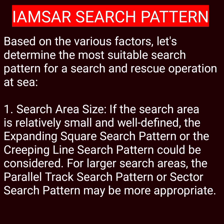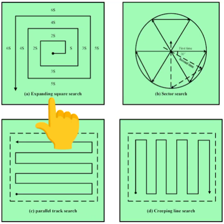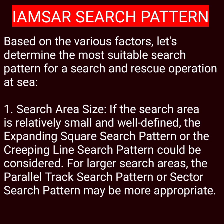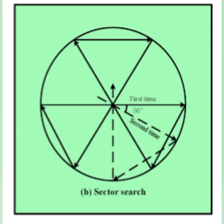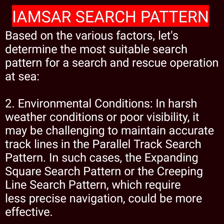Now that we know all the factors, let me discuss each factor and the kind of pattern you may choose in various circumstances. For search area size, if the search area is relatively small and well-defined, the expanding square search pattern or the creeping line search pattern could be considered. For larger areas, the parallel track search pattern or sector search pattern may be more appropriate.